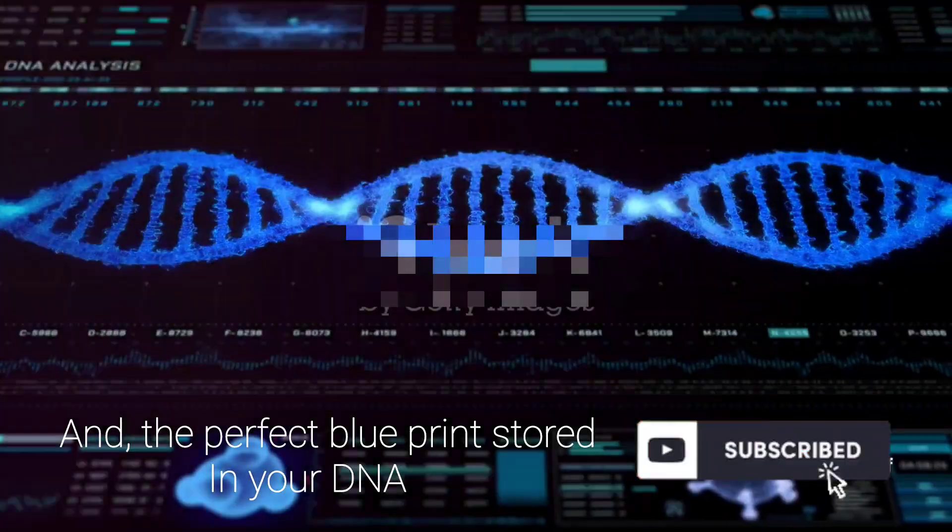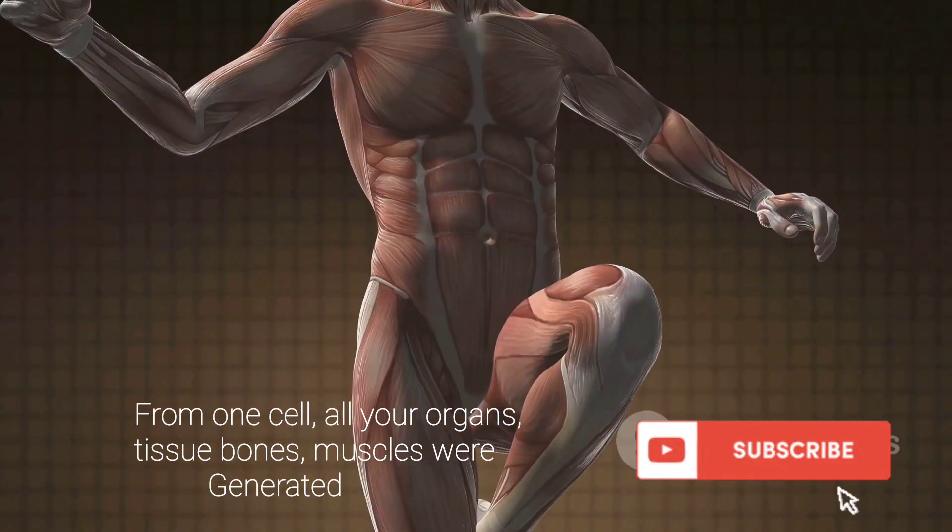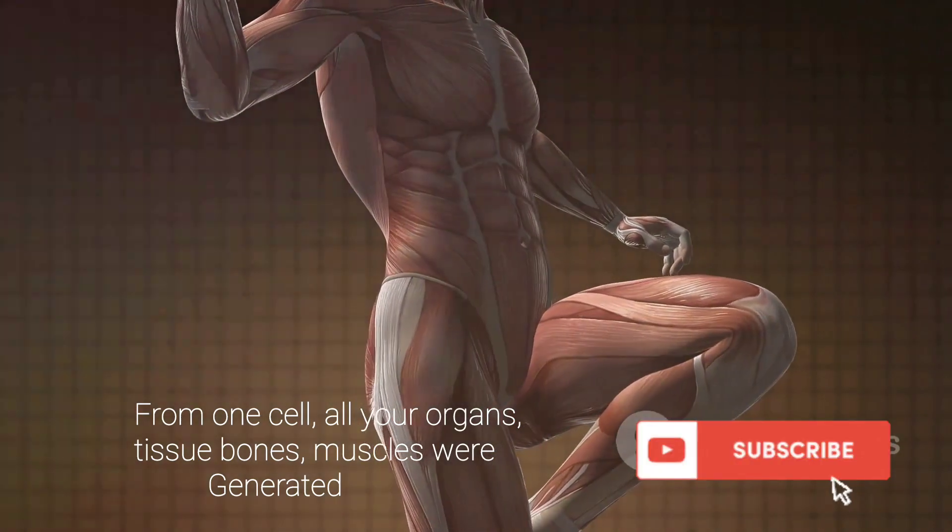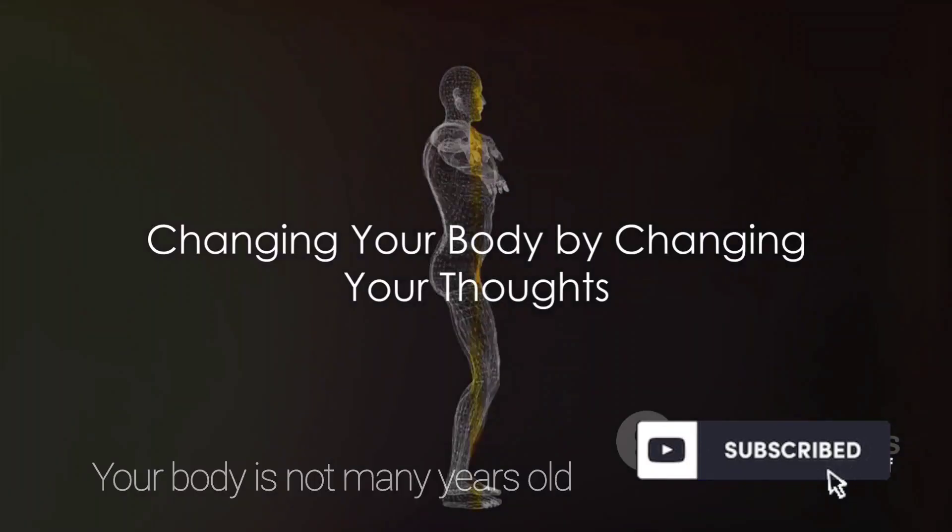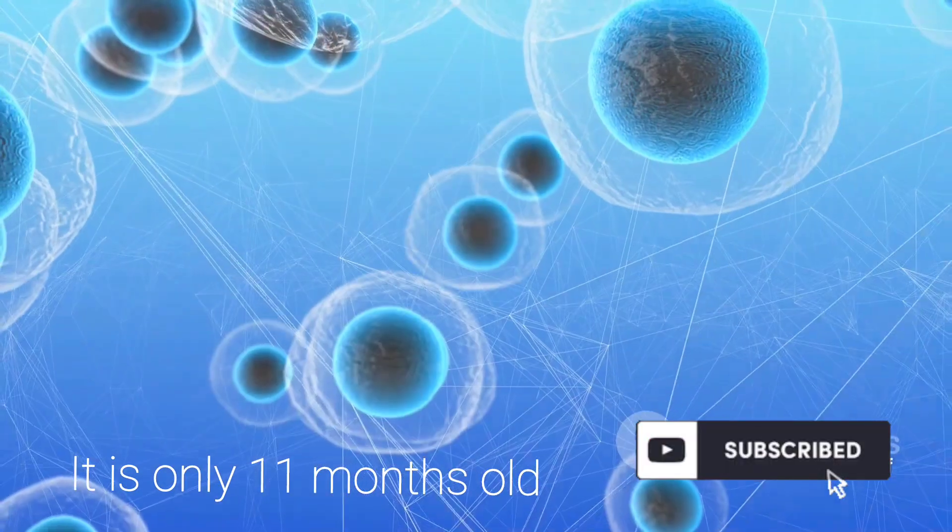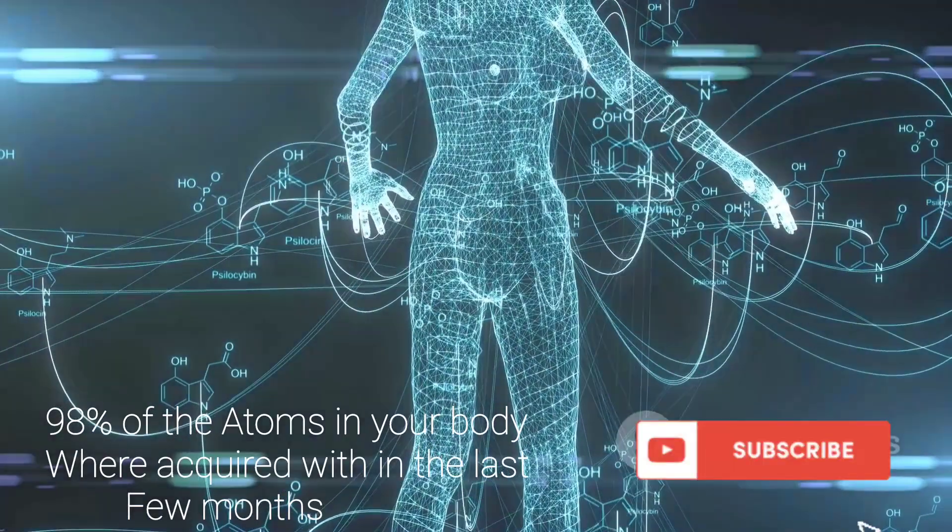From one cell, all your organs, tissue, bones, and muscles were generated. Your body is not many years old, it is only 11 months old. Yes, you're listening right. 98% of the atoms in your body were acquired within the last few months.